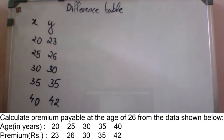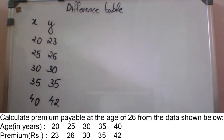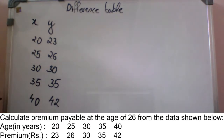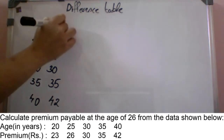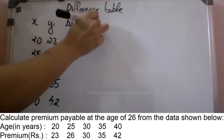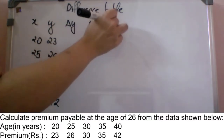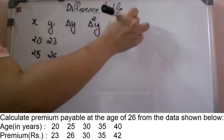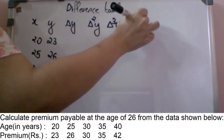The number of observations is 5. So we have 5 minus 1, giving us delta raised to n minus 1. Here we have delta raised to 4y, so we have columns: delta y, delta square y, delta cube y, and delta raised to 4y.